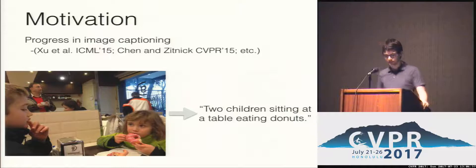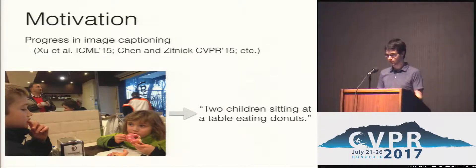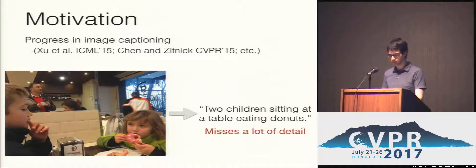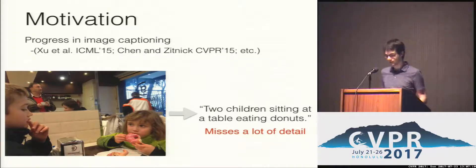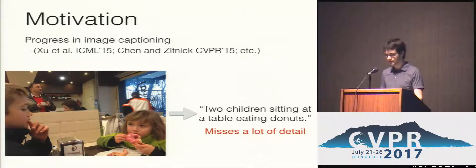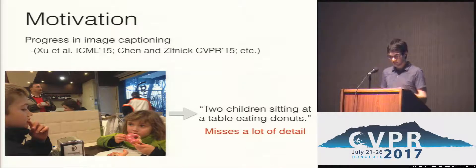There's been a lot of progress in sentence-level image captioning in the last couple of years, especially a couple of breakthroughs about two years ago. However, captioning images with only a single sentence necessarily misses out on a lot of detail. For example, in this image, an image captioning system might output 'two children sitting at a table eating donuts,' which, while correct, lacks details about most objects present in the image.